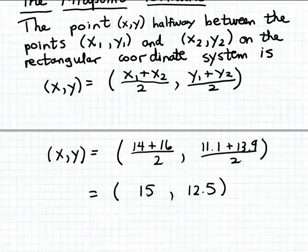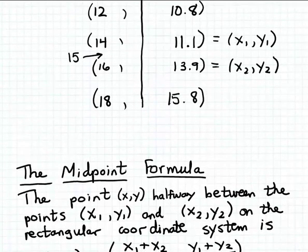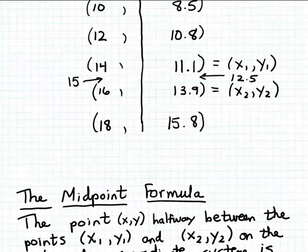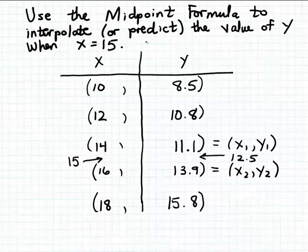That tells us that when we have an x value of 15, we can predict or interpolate that the matching y value is going to be 12.5, because (15, 12.5) is the point halfway between (14, 11.1) and (16, 13.9). So we can interpolate that when x is 15, y is 12.5.